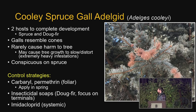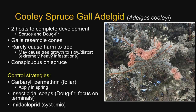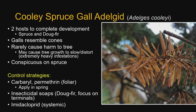Cooley spruce gall adelgid is something that probably everyone's seen, though maybe not everyone knows exactly what it is. It kind of looks like a cone. It needs two hosts to complete development — spruce and Douglas fir — and is a secondary pest that really just causes some aesthetic loss. The galls resemble cones, it rarely causes harm to the tree, but in extremely heavy infestations it may cause stunted growth. It's very conspicuous on spruce, but here's an image of it in its stage on Douglas fir, where it's caused some death of the tip.